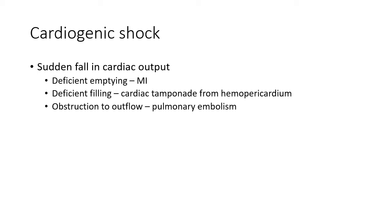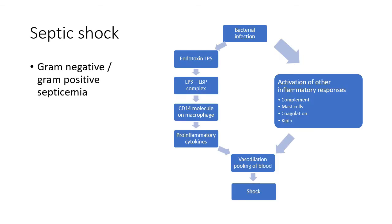The sudden fall in cardiac output can be due to deficient emptying — where blood reaches the heart but is not pumped out, as in myocardial infarction — or deficient filling, as in cardiac tamponade from hemopericardium, where blood fills the pericardial sac and compresses the heart. It can also be due to obstruction to outflow, where the heart pumps normally but outflow is obstructed, as in pulmonary embolism or tension pneumothorax.